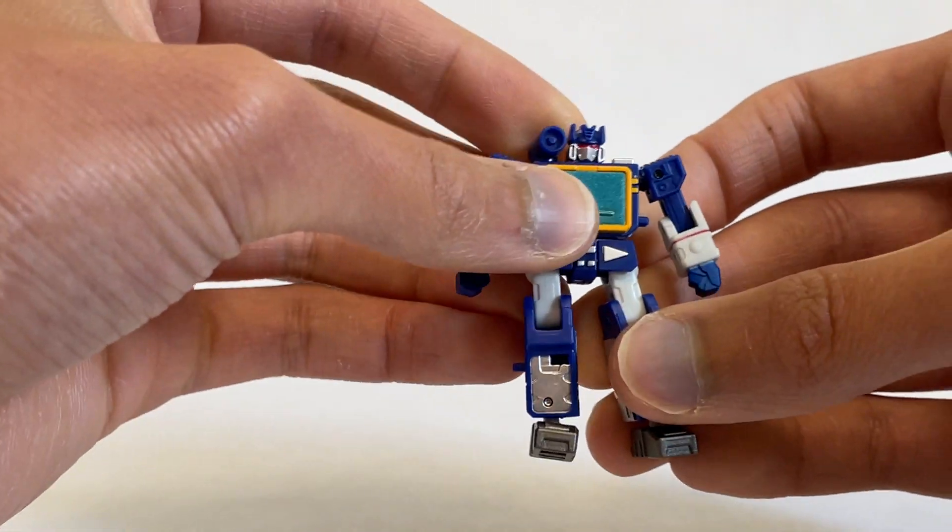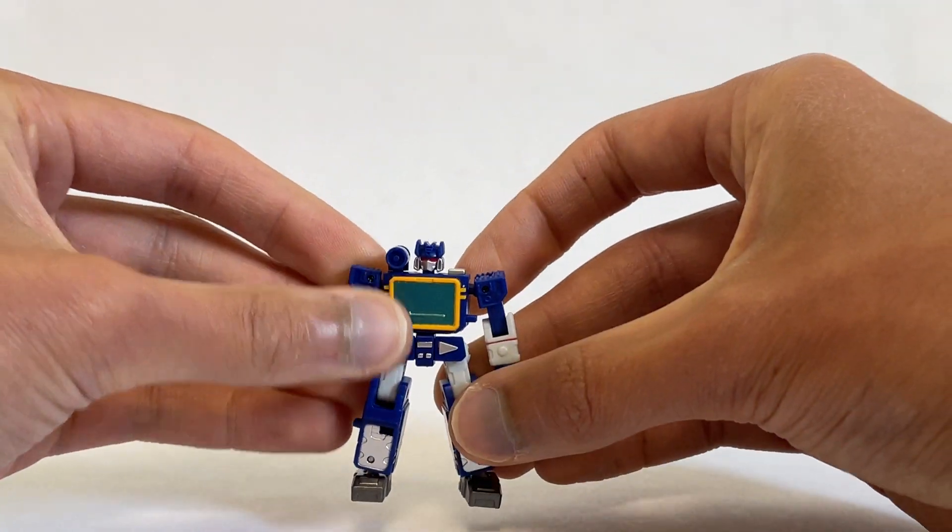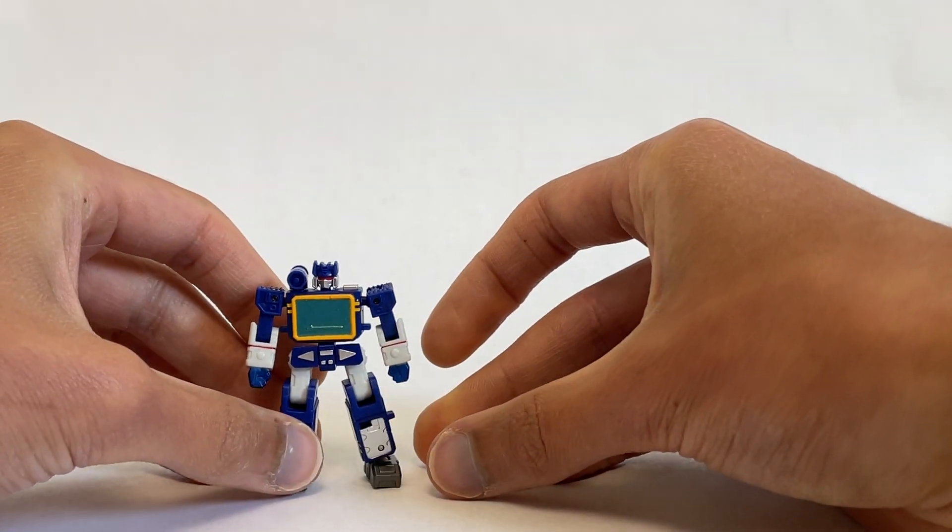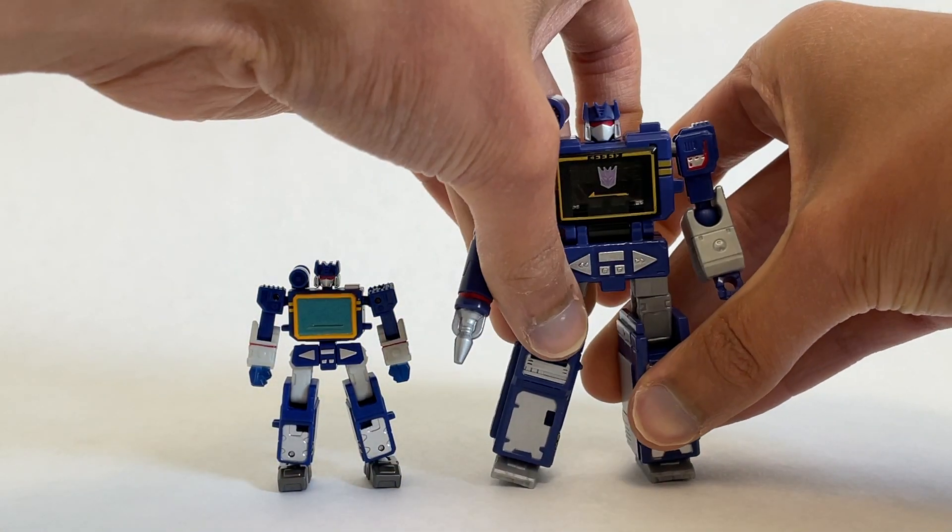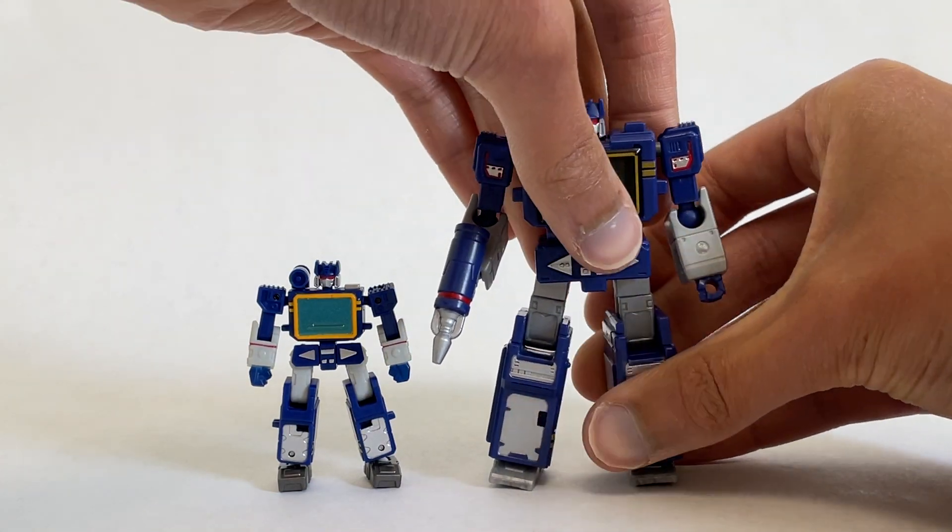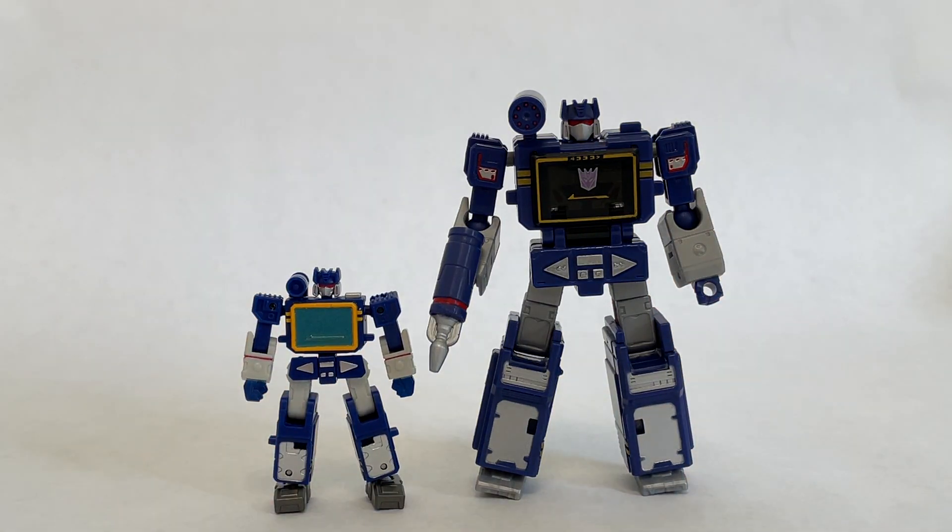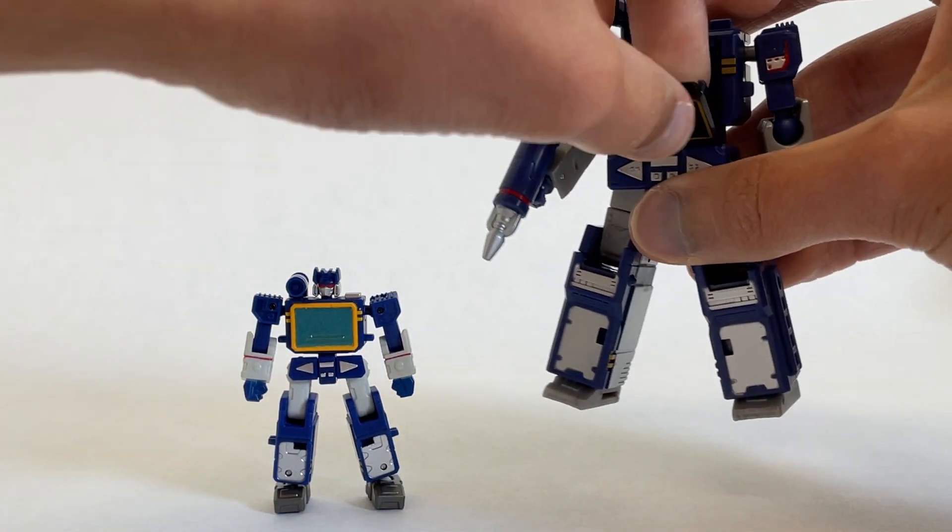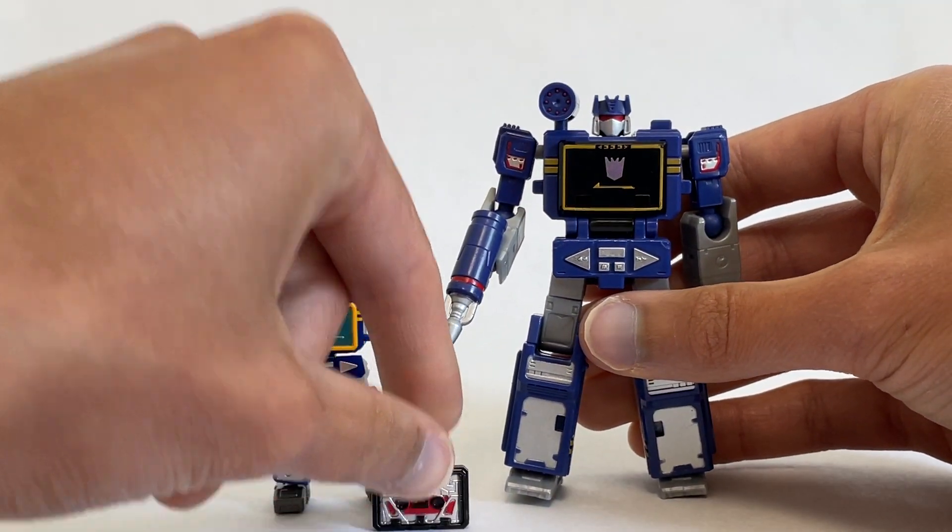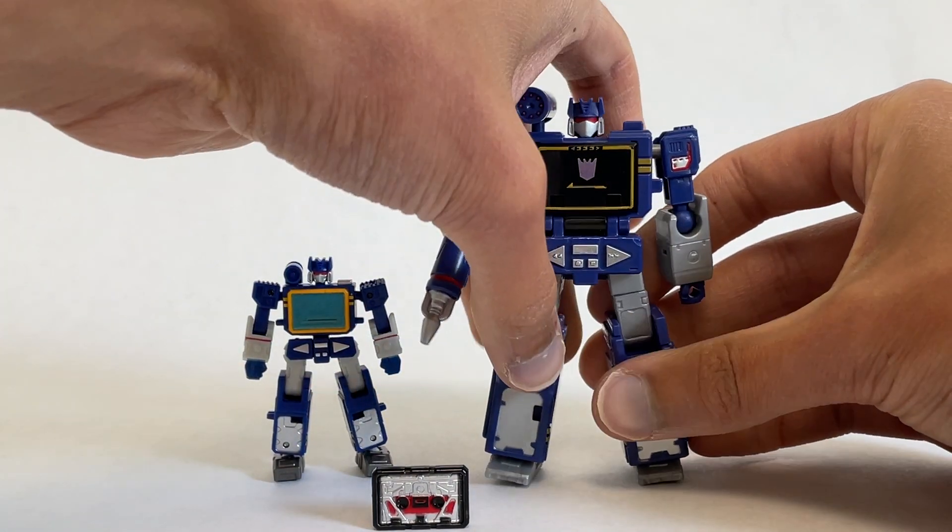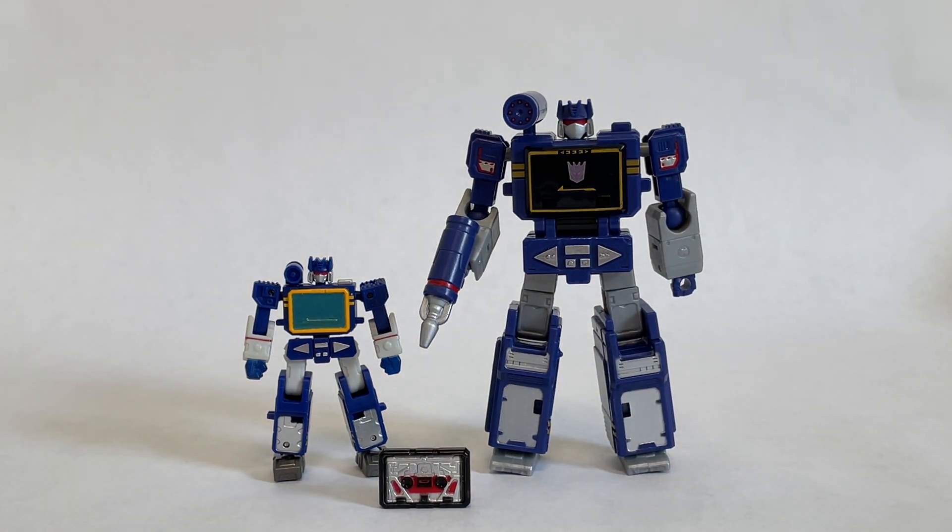Here, I'm bringing in the Core Class Soundwave for comparison. And you can see major size difference between the two. With this guy being almost the same size as the Core Class Laserbeak there. So quite the contrast. Amazingly well done by Dr. Wu to capture the G1 aesthetic of Soundwave in such a small size.